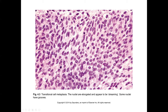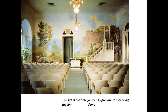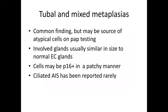Moving on to tubal and mixed metaplasias — these are very common, especially tubal metaplasia. This can be a source of atypical findings on pap smears, as these tubal metaplasias can look quite atypical sometimes. The glands tend to be similar in size to normal endocervical glands, whereas adenocarcinoma in situ tends to have smaller or expanded glands or both. These tubal metaplastic cells can be P16 positive, however in the splotchy, patchy pattern typical of endometrial epithelium. Usually they'll have cilia, although adenocarcinoma in situ with cilia has also been reported in rare instances.